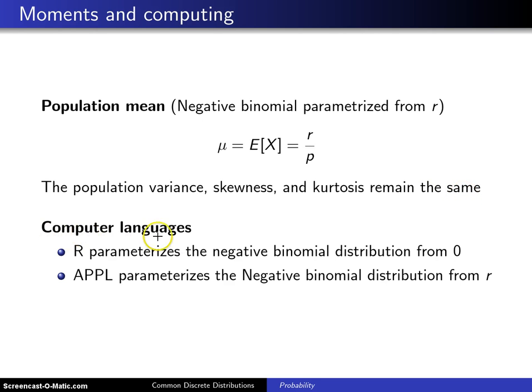Keep in mind with computer languages that R parameterizes the negative binomial by default from 0, whereas APPL parameterizes the negative binomial distribution from r. Again, one is lowercase n, the other is uppercase n. It only tells you if the support is starting at 0 or if it is starting at r.